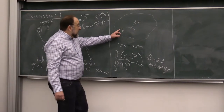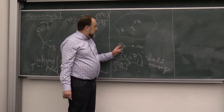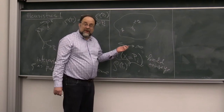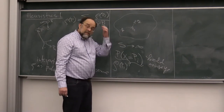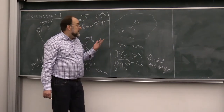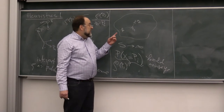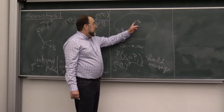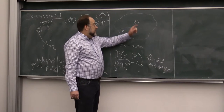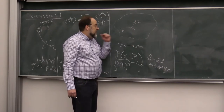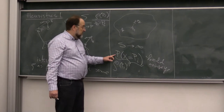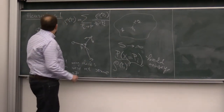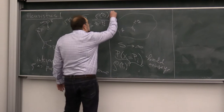So we let the surfer surf for a large number of steps, stop it, see where it is, then repeat many times and count how many times out of the total experiments we ended up in P2, how many times in P1. This will approximate the probability. That's heuristic number two.